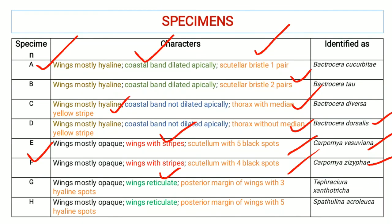For specimens with reticulate opaque wings, there is a further division: specimens with the posterior margin of wings having three hyaline spots, and specimens with the posterior margin having five hyaline spots. Specimens with opaque reticulate wings and three hyaline spots on the posterior margin are Tephrocura zenotriga, whereas specimens with five hyaline spots on the posterior margin are Sphaethuliana acroleuca.